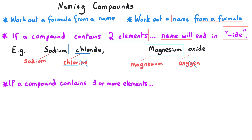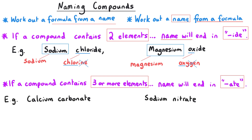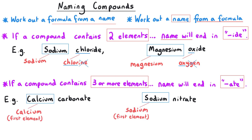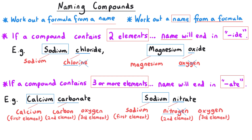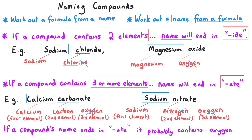If there are three or more elements present in a compound, the compound's name will end in '-ate'. Examples include calcium carbonate and sodium nitrate. Again, one element gets its full name, another gets most of its name with the ending replaced by '-ate'. In both these examples the third element is oxygen, and its element name gets no representation in the compound's name at all. A good rule of thumb: if a compound's name ends in '-ate', the element you can't identify from the name is highly likely to be oxygen.